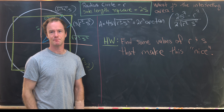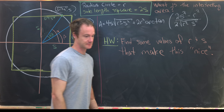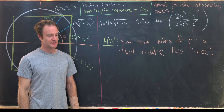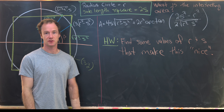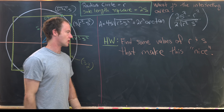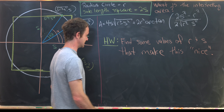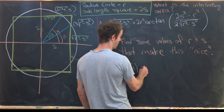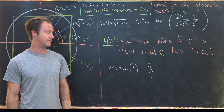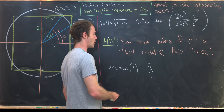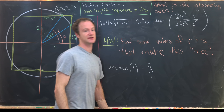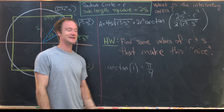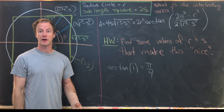We could leave it there, but here's a small homework exercise: certain values of r and s make the argument of the arctangent simplify nicely. For instance, arctan(1) = π/4, so you could choose r and s such that (2s² − r²) / (2√(r² − s²)) = 1. There are other nice values too — see what you can find. That's a good place to stop.